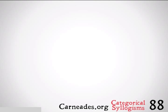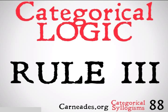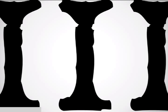Welcome back to 100 Days of Logic with 90 Second Philosophy and Carniades.org. Today we're going to be continuing with categorical logic and categorical syllogisms, looking at rule number three in our rules for categorical syllogisms. If you haven't checked out rules one and two, you might want to do that. With that out of the way, let's get started on rule three.